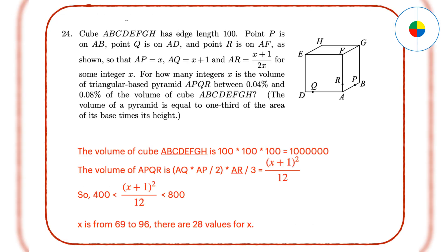Question 24 - This is an inequalities problem. Firstly, calculate the volume of cube A, B, C, D, E, F, G, H. Then calculate the volume of A, P, Q, R by using the formula for triangular pyramid. Then, figure out the range for X, and finally the number of values for X. The answer is 28.